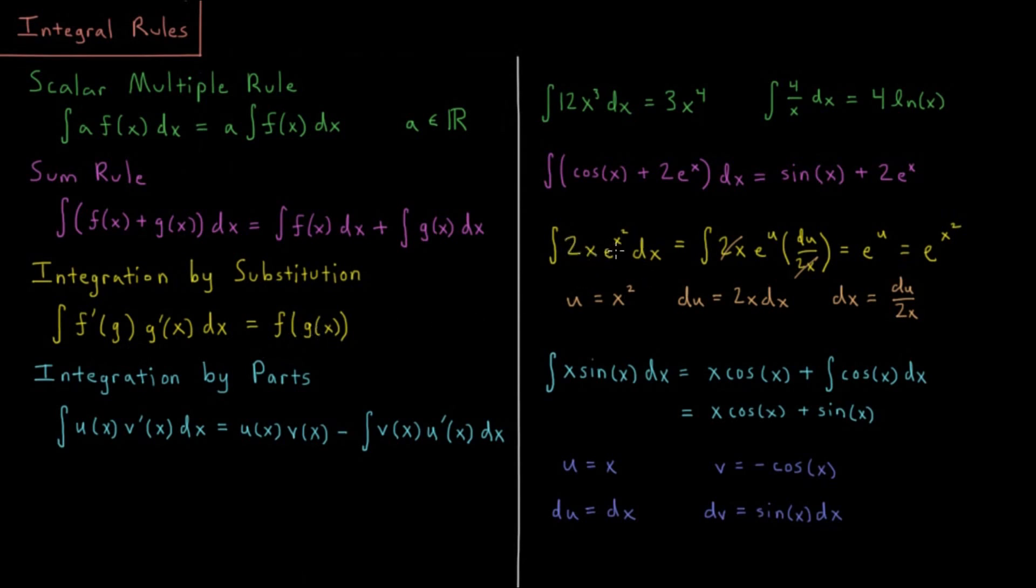For an example, if we have 2x times e to the x squared, we can set x squared equal to another variable u. Then we have du equals 2x dx. So we have the integral of e to the u, where dx equals du over 2x. The 2x cancels, and we get e to the u as the result. And u equals x squared, so this integral is e to the x squared.